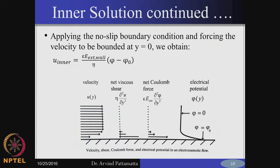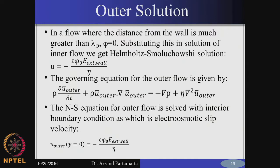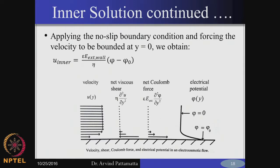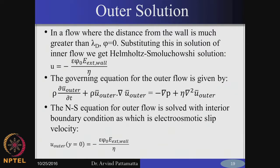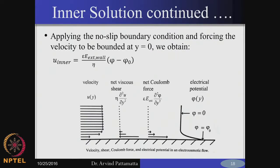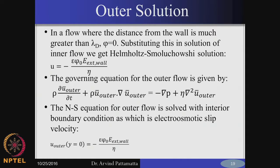This is the inner velocity profile. When we apply the condition that at y equal to 0, phi should equal phi naught, we get the velocity profile within the EDL. If you want the velocity at the edge of the EDL, you substitute phi equal to 0. The profile at the edge of the EDL becomes minus epsilon phi naught times E divided by eta. This will now become the boundary condition or the slip condition for the outer flow.